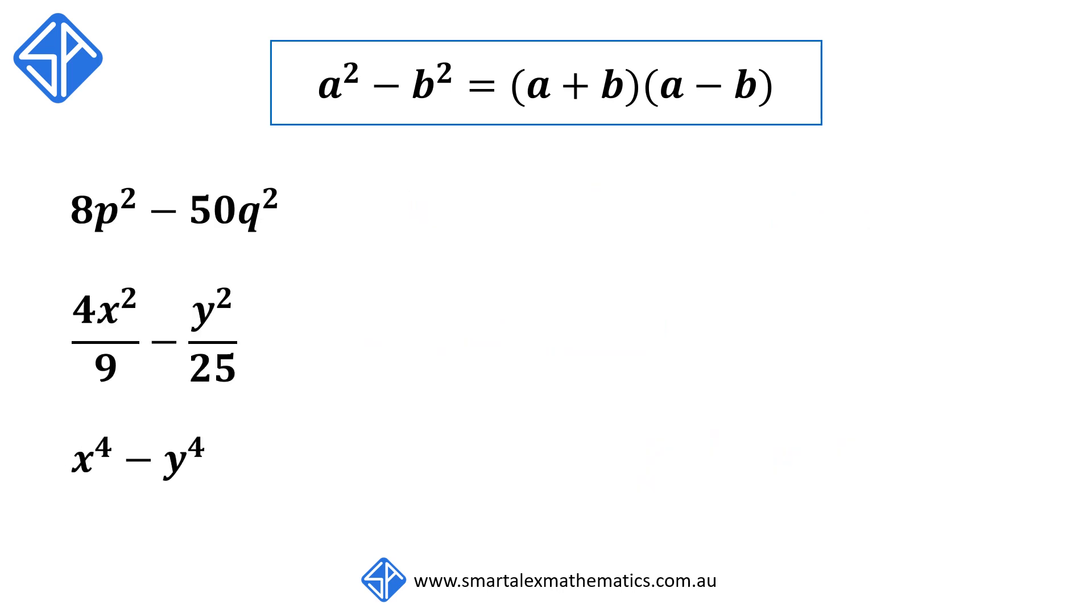Our next example, 8p² - 50q². Both 8 and 50 aren't perfect squares, but we can use the trick of factorizing out the 2, so that we get 2(4p² - 25q²).